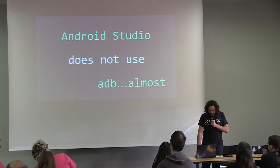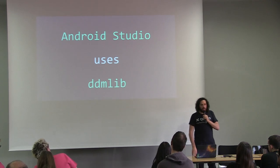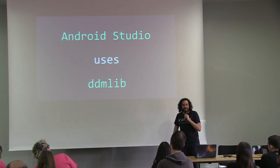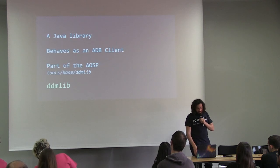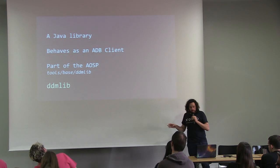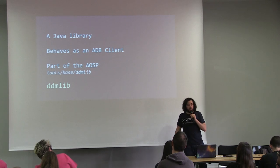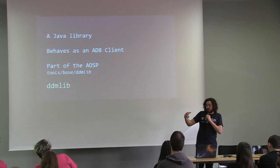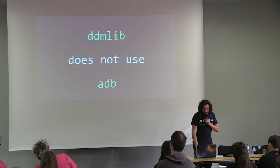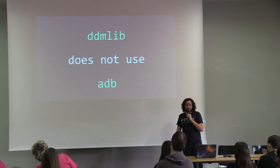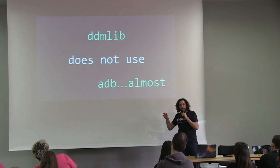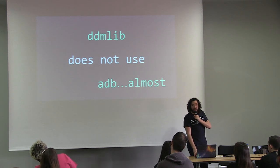You can download DDMLIB and use it — and you can browse the source code and check how they're doing things. It's easier to read than the ADB client source code. Another news: DDMLIB does not use ADB. Almost. The only usage of ADB by DDMLIB is to start the ADB server, and only that. The structure is: DDMLIB connects through TCP to the ADB server, and the server is like any other ADB server.